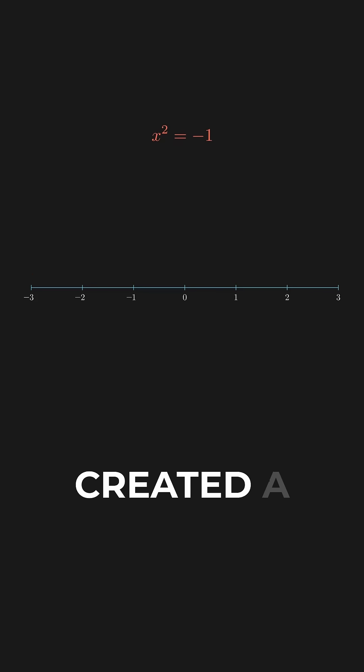Until mathematicians created a new number, they called it i, and defined it as the square root of negative one. This means i squared equals negative one. It was labeled as the imaginary number, but that's not where this story ends.